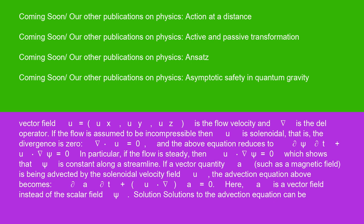If the flow is assumed to be incompressible, then u is solenoidal, that is, the divergence is zero: ∇·u = 0, and the above equation reduces to ∂ψ/∂t + u·∇ψ = 0. In particular, if the flow is steady, then u·∇ψ = 0, which shows that ψ is constant along a streamline.